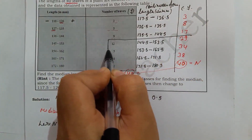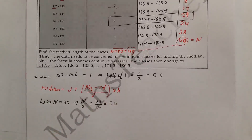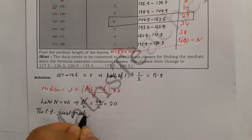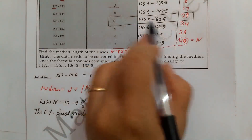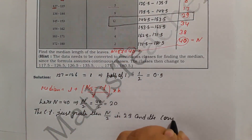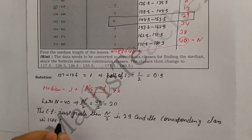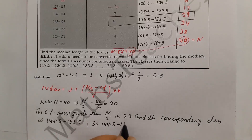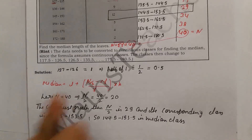So the median class is the interval corresponding to the cumulative frequency just greater than n/2 = 20, which is the cf value 29. The corresponding class interval is 144.5 to 153.5. This is our median class.